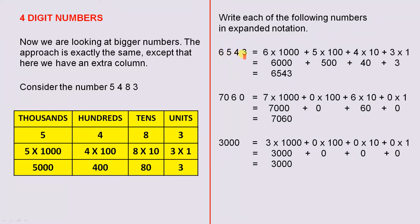6,543. 6 times 1,000 plus 5 times 100 plus 4 times 10 plus 3 times 1. 6,000 plus 500 plus 40 plus 3. 6,543.